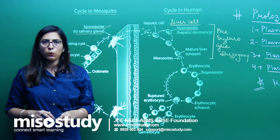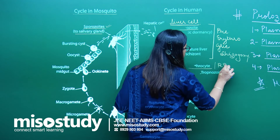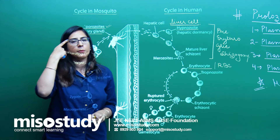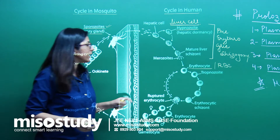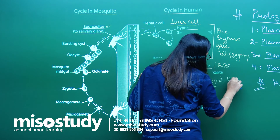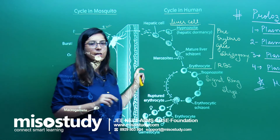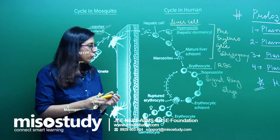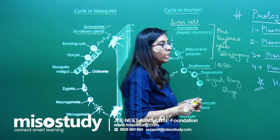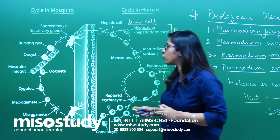Once the merozoites have completed the whole infection in the liver, they are ready to enter into RBCs. Once they enter the erythrocyte — red blood cells — there is formation of a stage termed the signet ring stage, which looks just like a diamond on a ring. After that there is formation of an amoeboid stage, and they also show formation of a toxic chemical — haemozoin crystals.